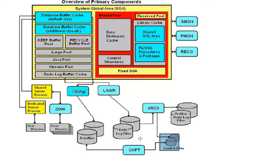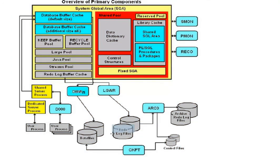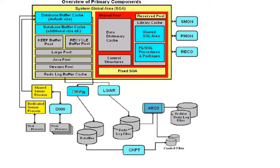Control files are covered in more detail in a later module. Archived redo log files are redo log files that have been archived in one place, because the redo log file size is small and those need to be kept somewhere else. Through the archival process, redo log files are archived, and these archived redo log files are also necessary during database recovery.